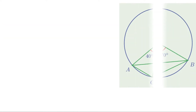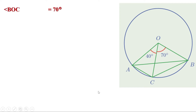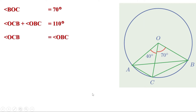Now the third figure. Look at triangle BOC: angle BOC is 70 degrees and it is isosceles because OC and OB are equal. The sum of the two base angles is 180 minus 70, which is 110 degrees. Since both angles are equal, each is 55 degrees.